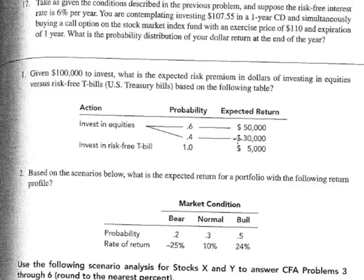That's a loss. If you invest in T-bills, then you get $5,000. The question is: what is the risk premium? Basically, the risk premium is the return that you get over and above the risk-free rate or the risk-free return. In this particular problem, you know that the risk-free return is $5,000, so whatever you get above $5,000 would be the risk premium.